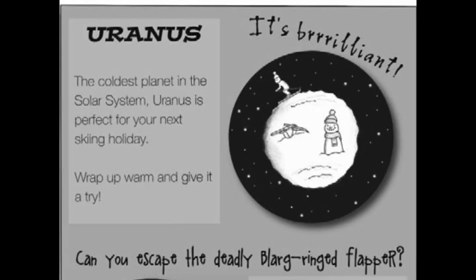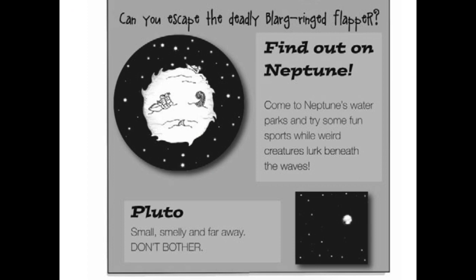Uranus — the coldest planet in the solar system — is perfect for your next skiing holiday. Wrap up warm and give it a try, it's brilliant. Can you escape the deadly blog ring flapper? Find out on Neptune. Come to Neptune's water parks and try some fun sports while weird creatures lurk beneath the waves. Pluto — small, smelly and far away. Don't bother.